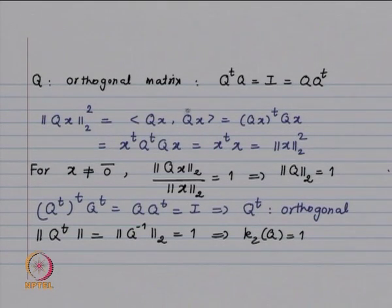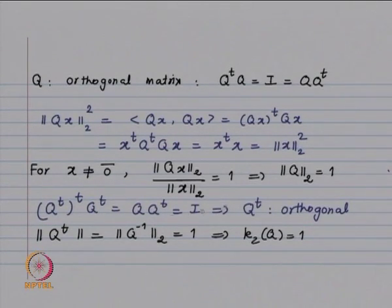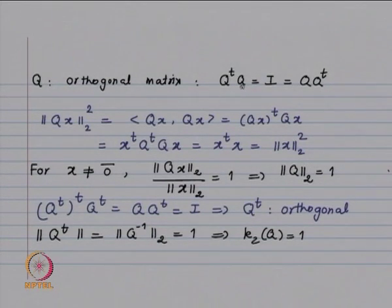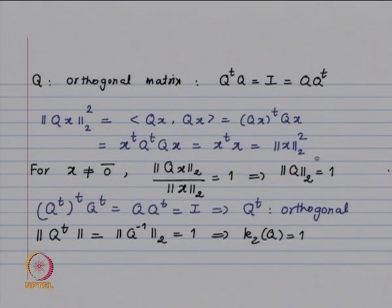If Q is an orthogonal matrix, Q^T is also orthogonal because (Q^T)^T·Q^T = Q·Q^T = I. Hence ‖Q^T‖₂ = 1 by the same result, but the inverse of an orthogonal matrix is Q^T, so ‖Q⁻¹‖₂ = 1. Therefore the condition number κ₂(Q) = ‖Q‖₂·‖Q⁻¹‖₂ = 1.